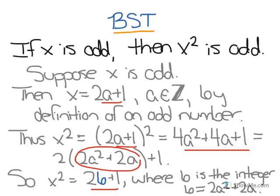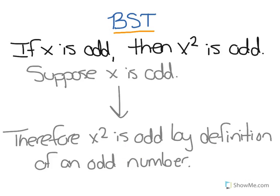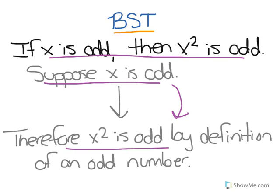Therefore, x squared must be odd by definition of an odd number. So we see that we proved this conditional statement directly, because we started with a true assumption, we assumed that the first part was true, and then we used mathematical logic to show that the second part is also true.